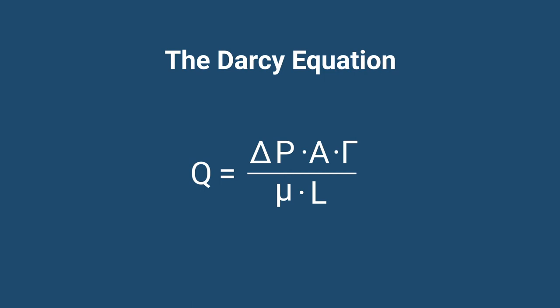This means that everything above the line is proportional to the flow rate, while everything below the line is inversely proportional to the flow rate. Looking at the equation like this, the simple mathematical statement it makes is intuitive and easily grasped.